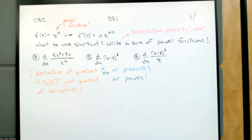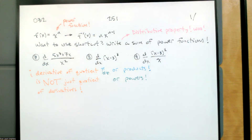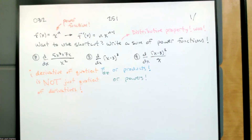There are limitations here. If we want to use this shortcut, we have to write a sum of power functions. We saw on Wolfram Alpha that the derivative of a quotient is not just the quotient of the derivatives. Similarly for products and powers. We need other tools to deal with products, quotients, and powers. But if we can write a sum of power functions, then we get to use our shortcuts.